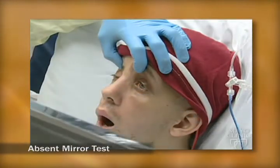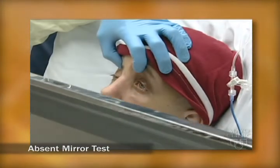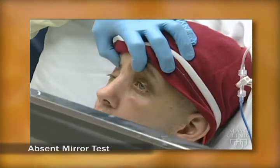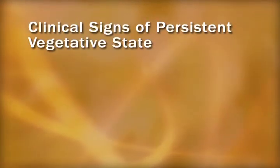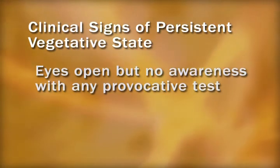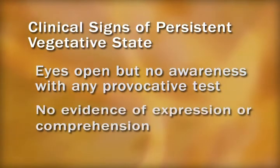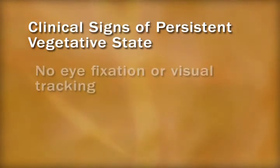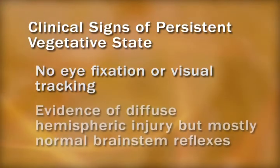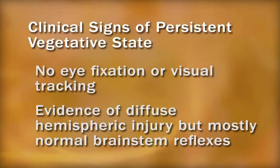We demonstrate a patient in persistent vegetative state who shows no evidence of eye fixation when we move a large mirror in front of his eyes. The major neurologic findings are: the eyes are open but there is no awareness with any provocative test; at no point is there any evidence of expression or comprehension; there is no eye fixation or reproducible tracking of objects; and there is evidence of diffuse hemispheric injury, but brainstem reflexes are usually intact.